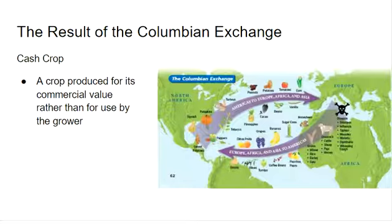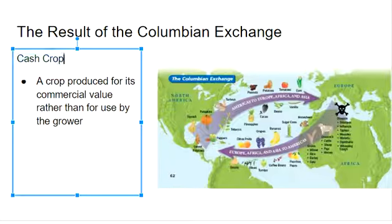In class, we focus mostly on the negative effects of the Columbian Exchange on the Native American people. Another result of the Columbian Exchange was the creation of cash crops. A cash crop is a crop that is produced for its commercial value rather than for use by the grower.